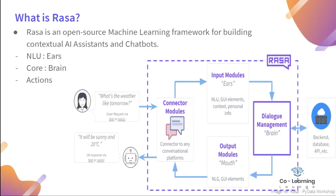Rasa has three main components. As you can see, Rasa is an open source machine learning framework for building contextual AI assistants and chatbots. It has three major components: NLU, which you can treat as the ears of the human; Core, which is dialogue management - the brain that holds all the context; and third is Action, which is the fulfillment module where you can go ahead and call APIs and databases.